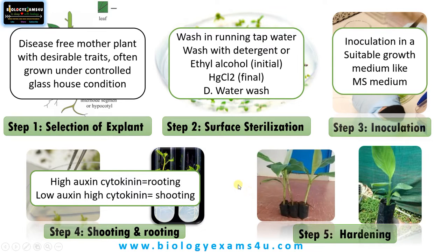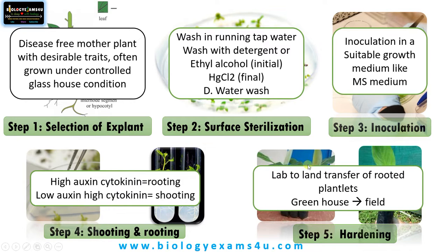The next and final step is called hardening. It is simply the gradual transfer of this cultured plant from lab to land or to the field. This rooted plant is first kept in the laboratory under shade, then more leaves and roots get established. Then we gradually transfer the plant into a greenhouse and finally take it out into the field. Hardening is a process of gradual acclimatization, helping the plant adapt from milder laboratory conditions to normal field conditions.